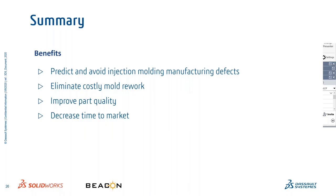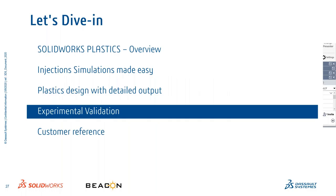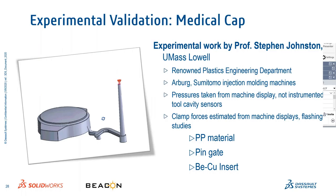To summarize, SOLIDWORKS Plastics gives the benefit of predicting and avoiding injection molding defects at the early stage of design, potentially eliminating mold rework in later stages. It helps improve part quality, reduces the number of iterations needed to prove the mold for production, and decreases time to market.